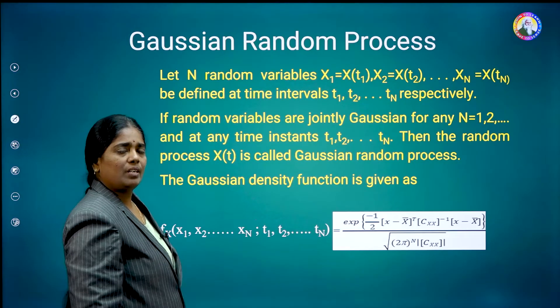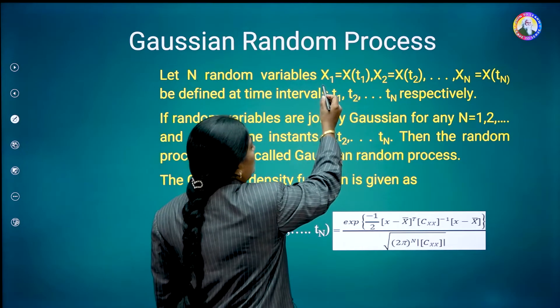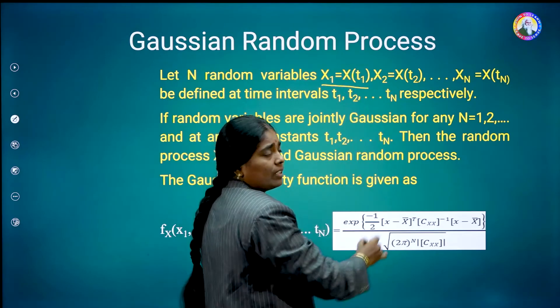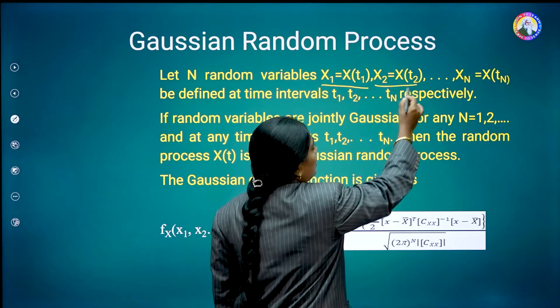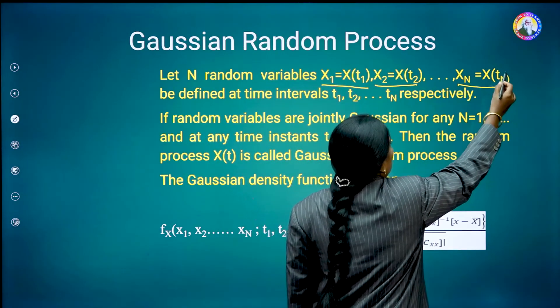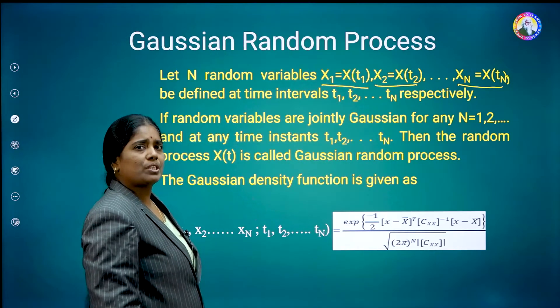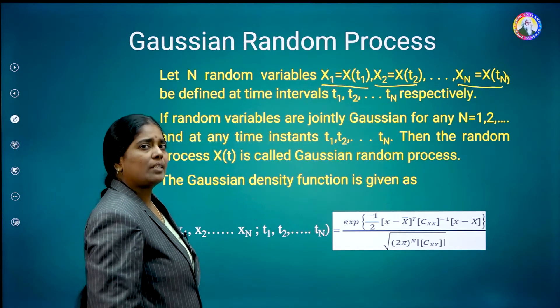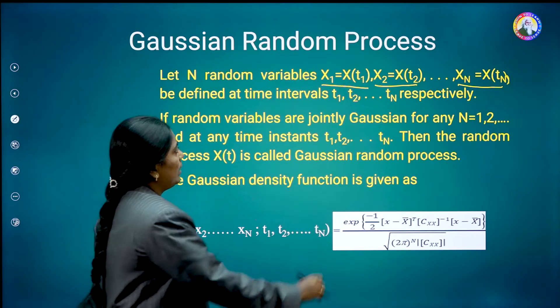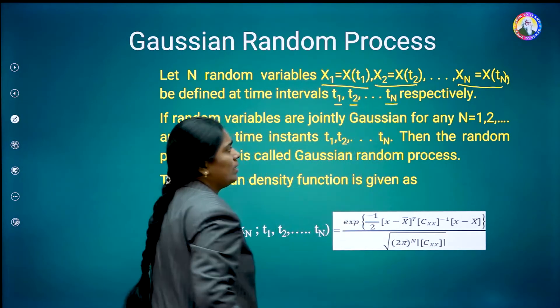Let us define any number of random variables. Say, x1 is equal to x of t1, x2 is equal to x of t2, so on, xn is equal to x of tn. Like that, any number of random variables, if you are defining, at the respective times, like t1, t2, so on, tn, respectively.